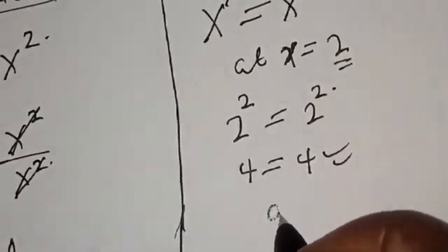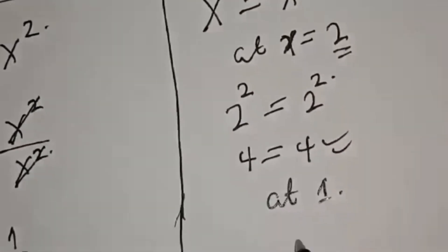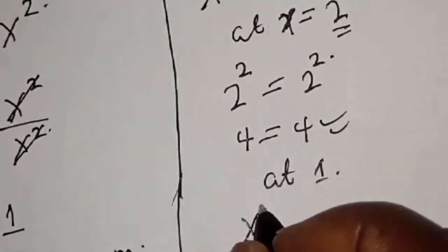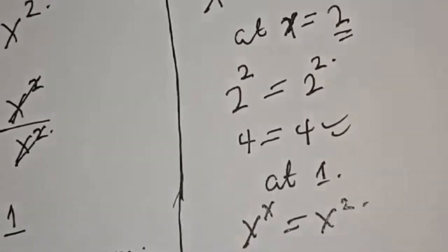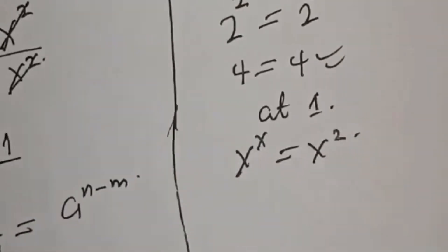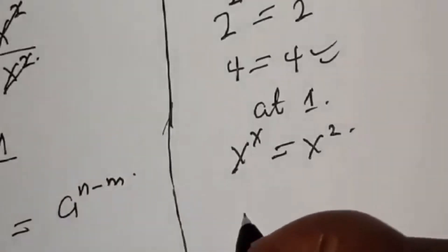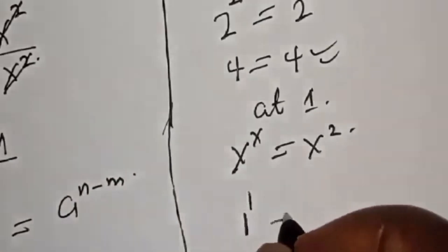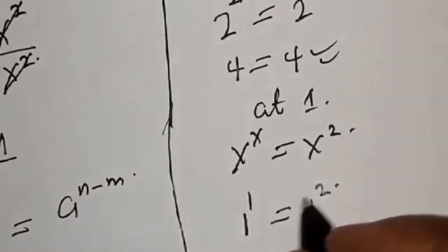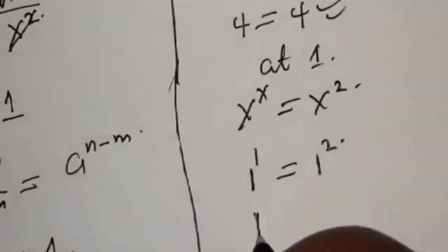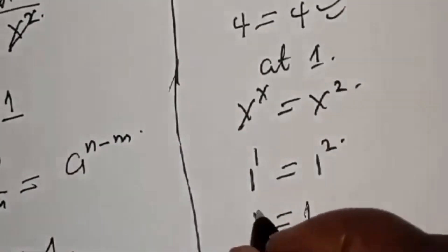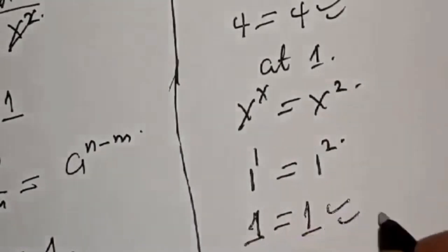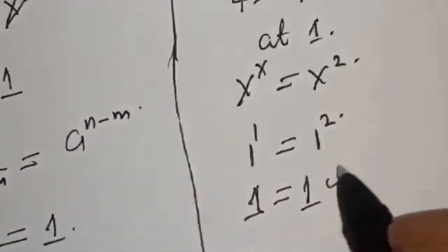Let's check at s equals 1. We have 1 raised to power 1 equals 1 squared. The left-hand side is 1, and 1 squared is also 1, meaning the left answer equals the right answer. We satisfy the given equation at s equals 1.